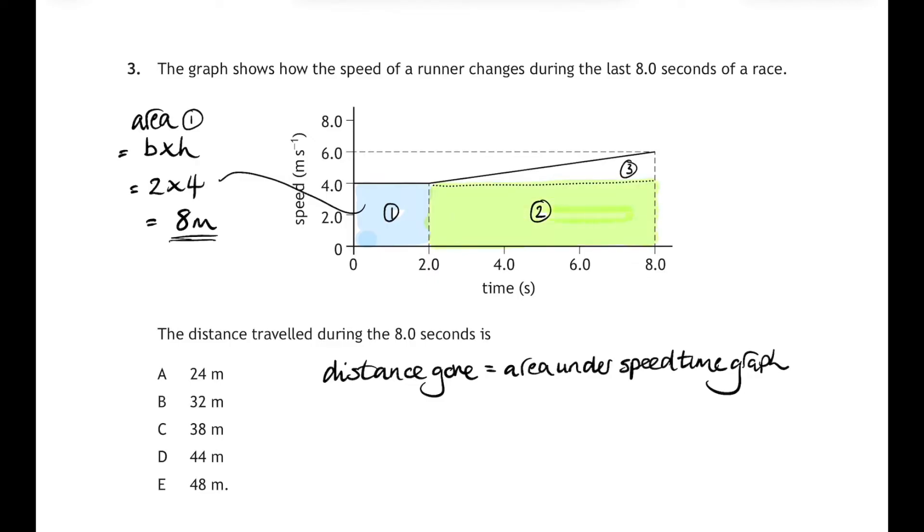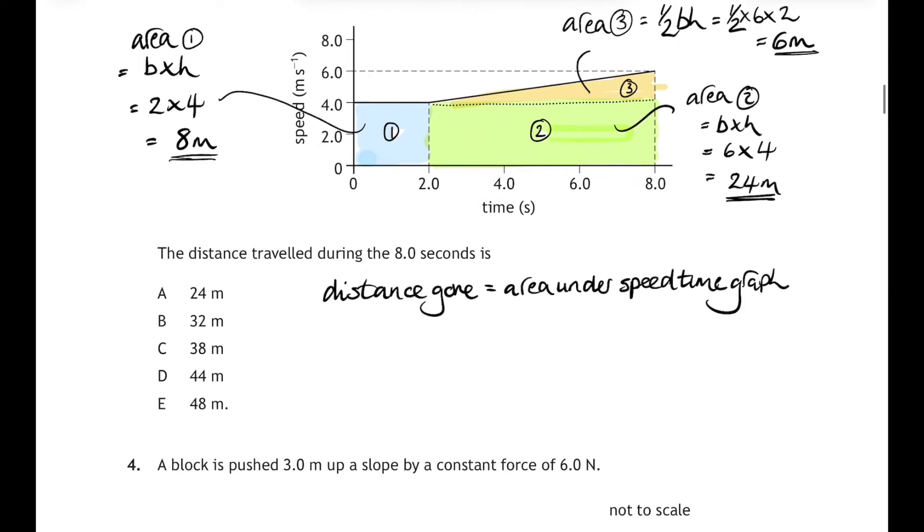Area two is also a rectangle, and the base is equal to six and the height is equal to four. So six times four is 24. And the last area, area three, is a triangle, and the area of a triangle is a half the base times the height. That's a half of six times two, and that gives us six meters. So if we take all three of those areas and add them together, that's eight plus 24 plus six, gives us an answer of 38 meters, and that corresponds to answer C.